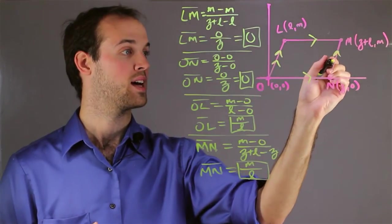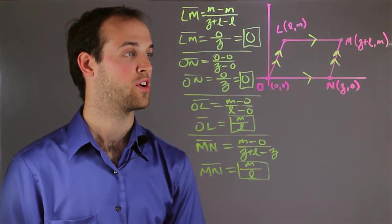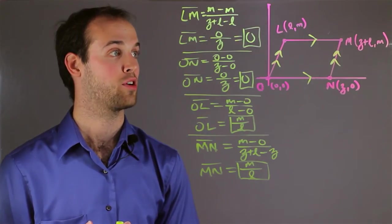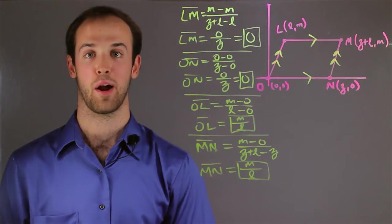So now I have proven both sets of opposite sides parallel to each other, and therefore quadrilateral LMNO is a parallelogram.